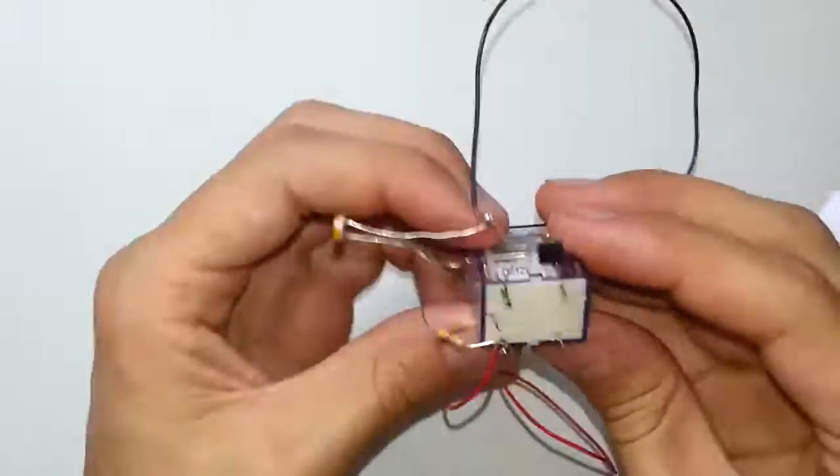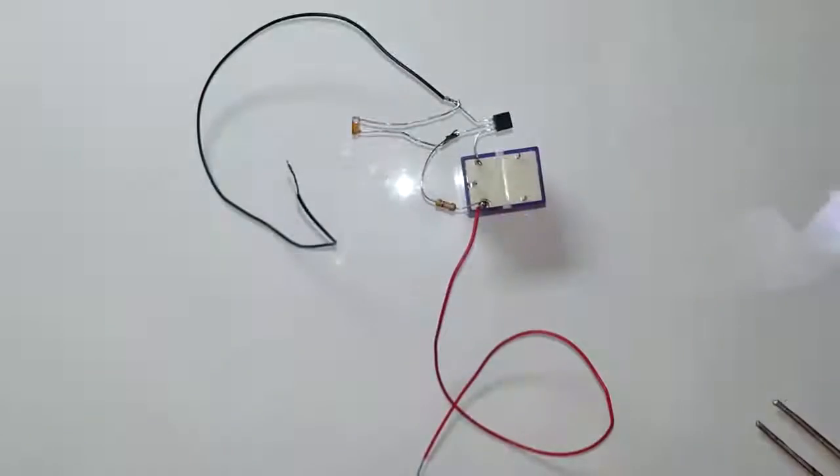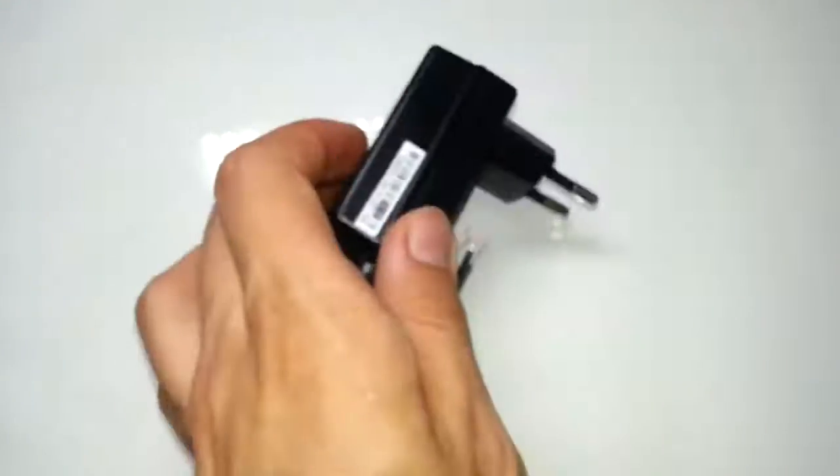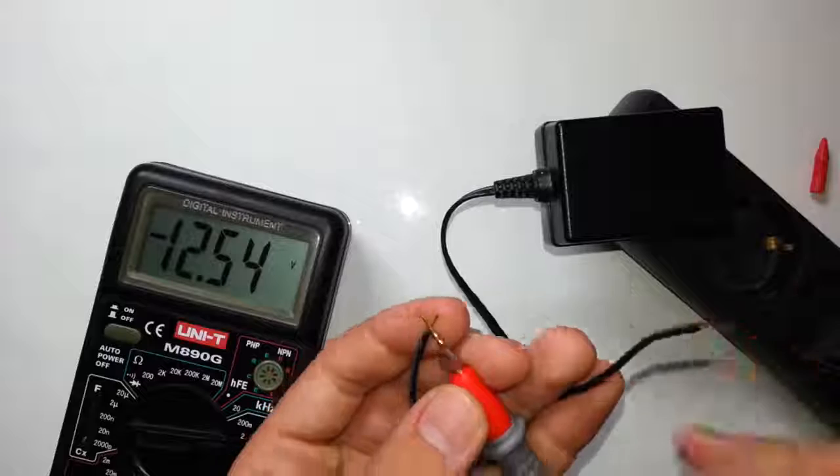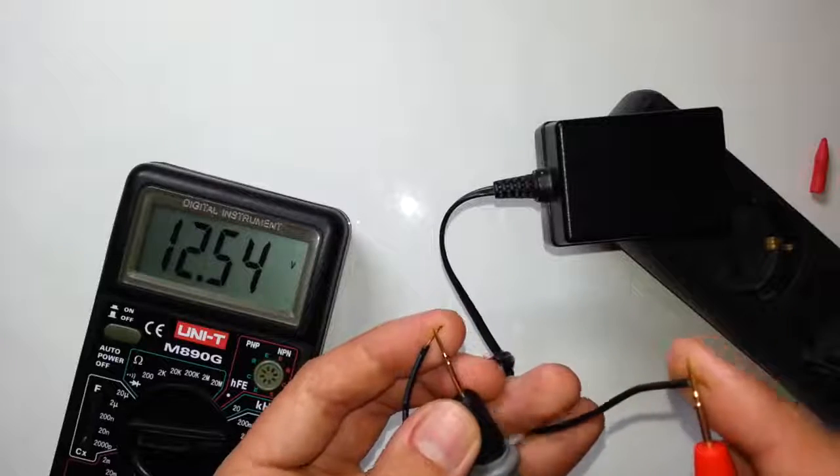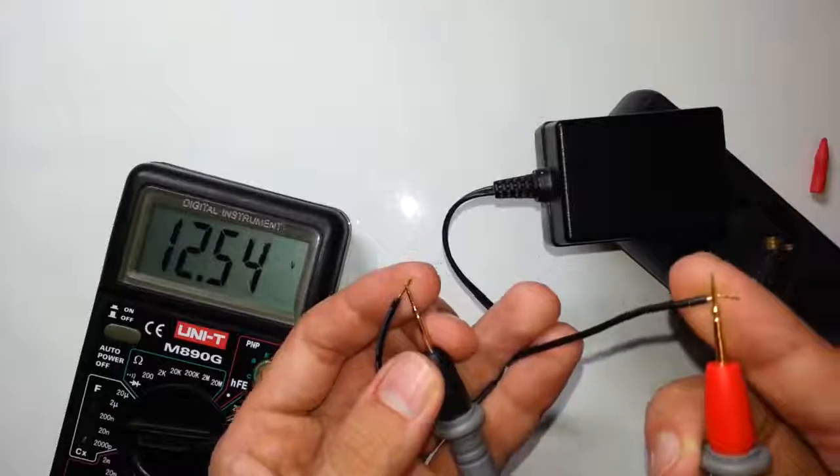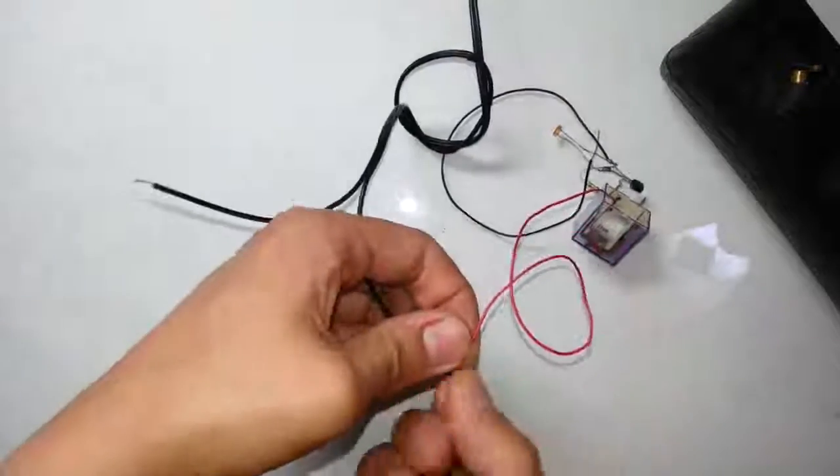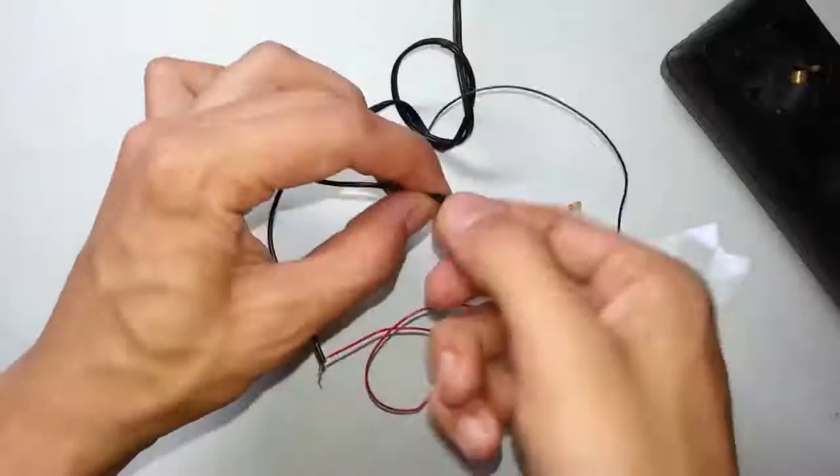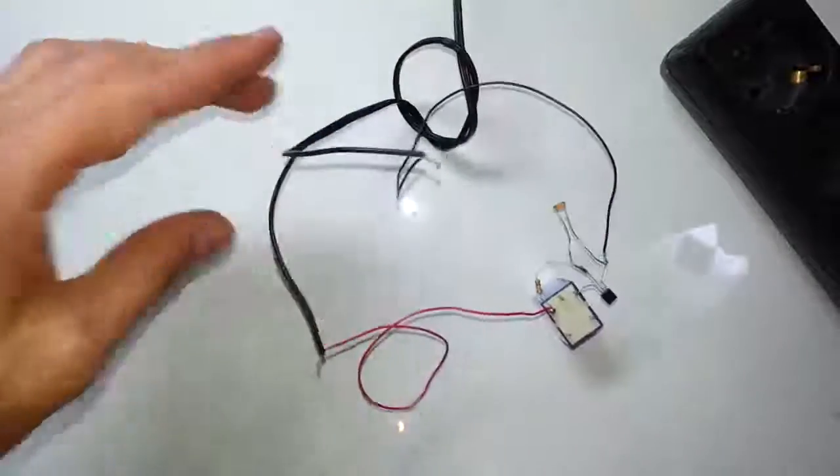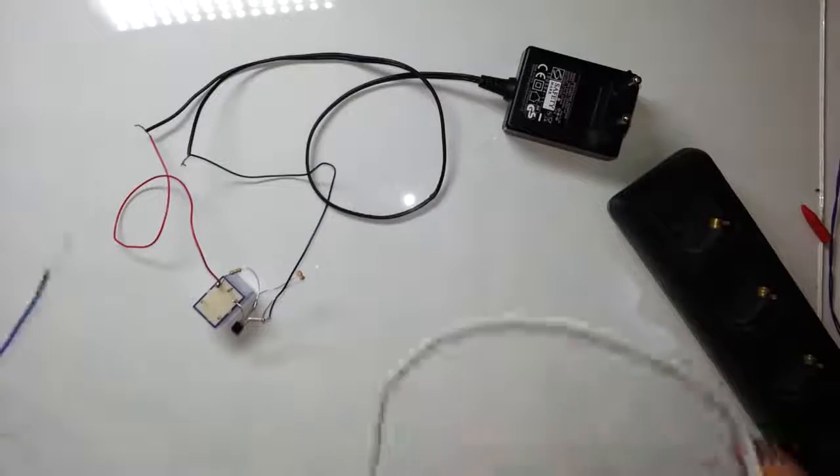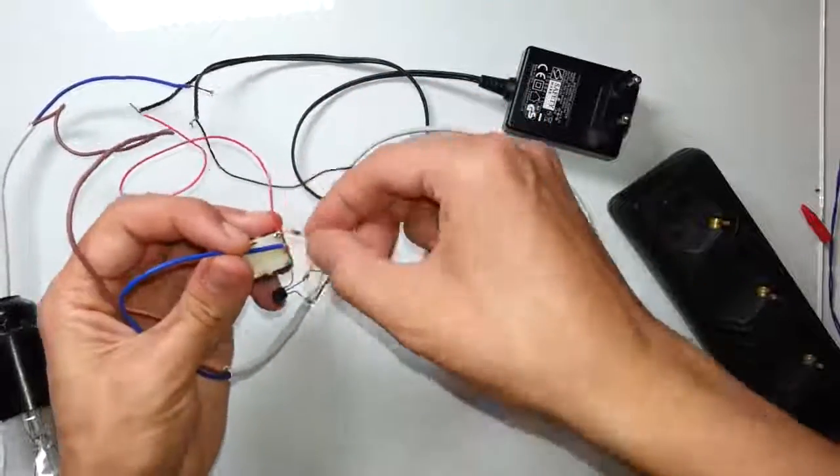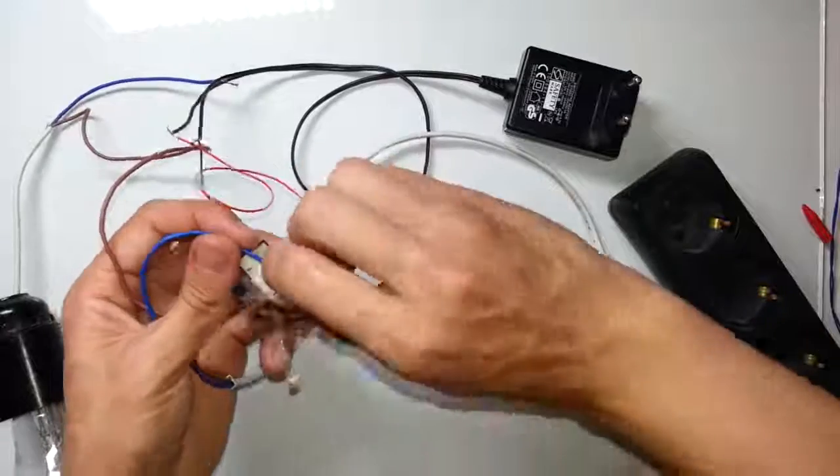Now everything is ready. Let's test this device. For powering I will use a 12V power supply. Let's check the polarity of the power supply. And the last thing is a light bulb. Let's connect the light bulb sequentially with normally open contacts of the relay.